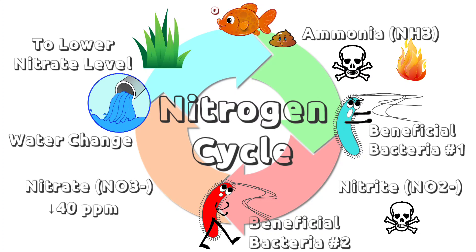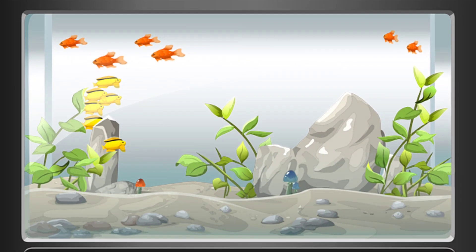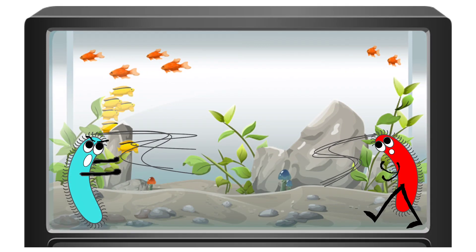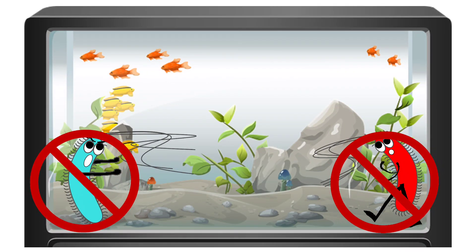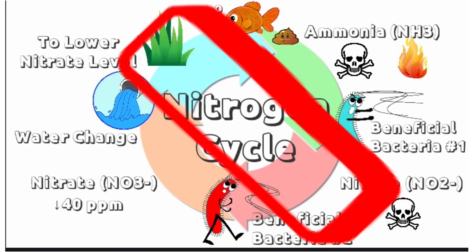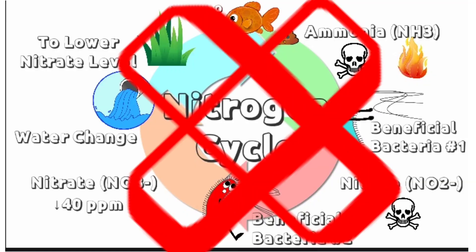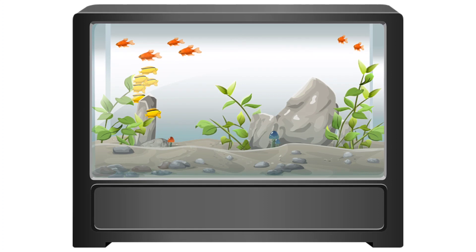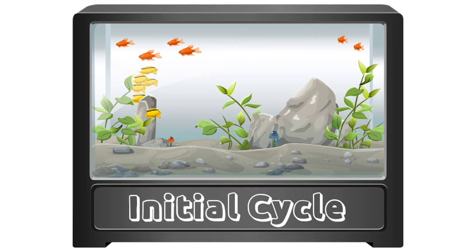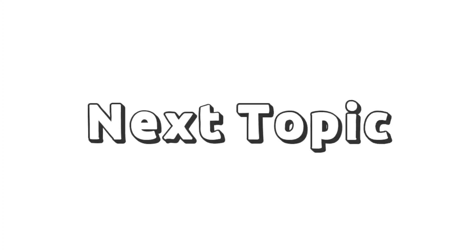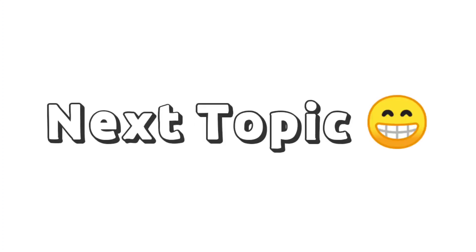That is the nitrogen cycle — simple, right? But take note: when you set up a new aquarium, those beneficial bacteria are not yet present. There is no way to convert ammonia into nitrite and nitrite into nitrate. That is why it is necessary to initially cycle your aquarium before adding new fish, and that will be the topic for our next video.